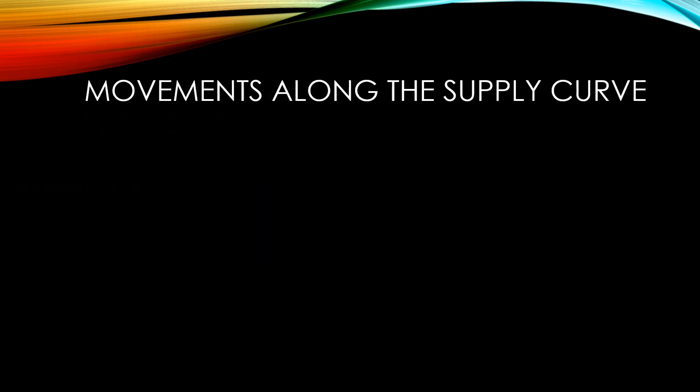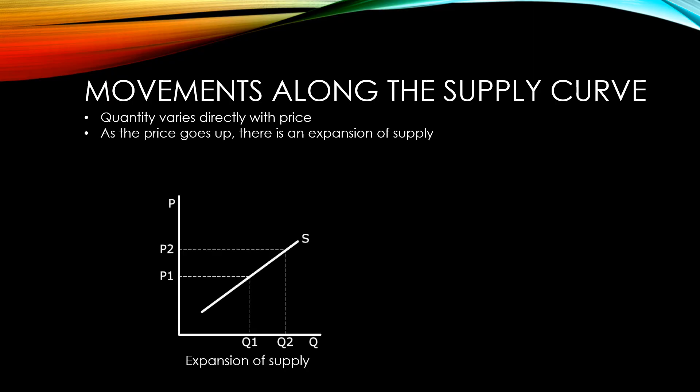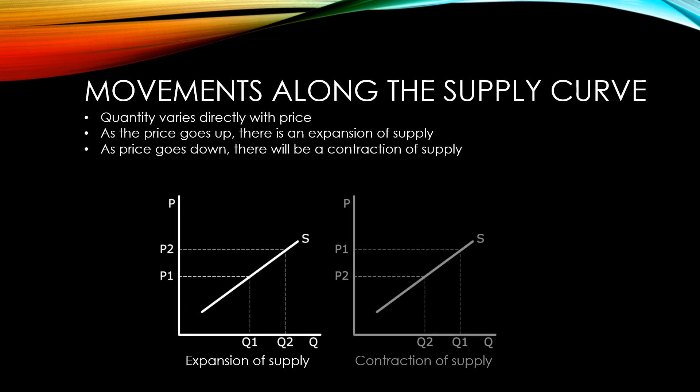As we have just seen, quantity varies directly with price. This means as the price goes up there will be a corresponding expansion of supply. Similarly, as the price goes down there will be a contraction of supply.